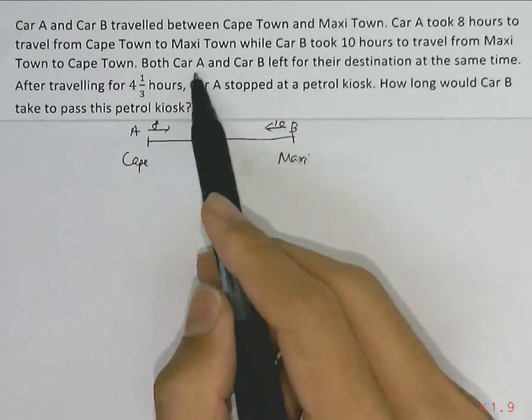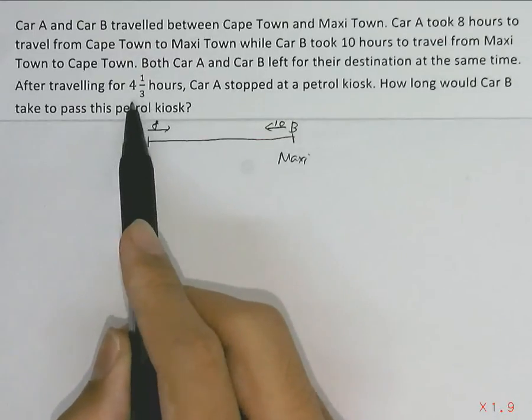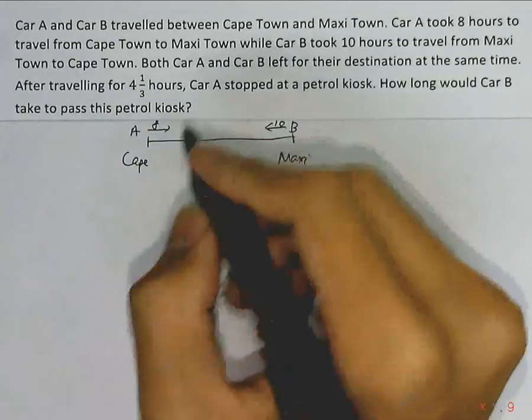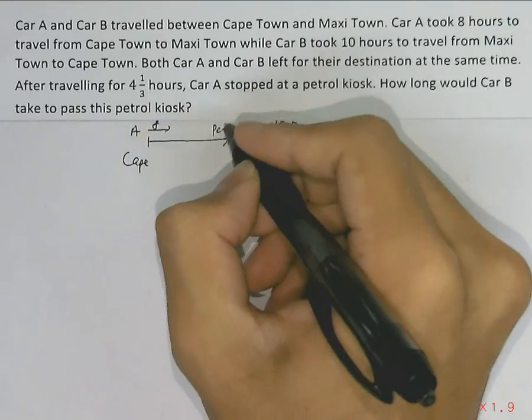Both car A and car B left their destination at the same time. Now, after travelling for 4 and 1/3 hours, car A stops at the petrol kiosk. Let's say this petrol kiosk is somewhere here, the petrol kiosk.